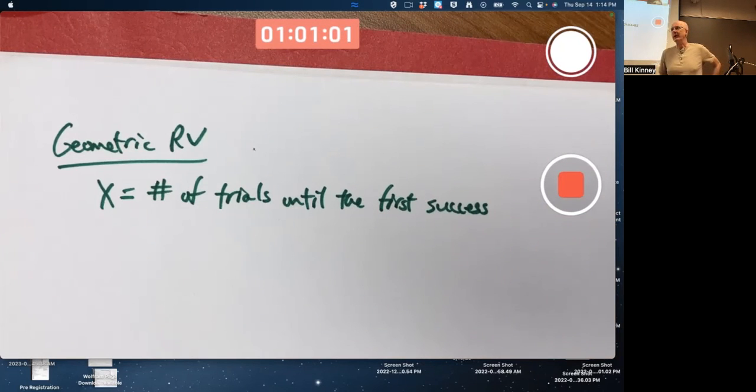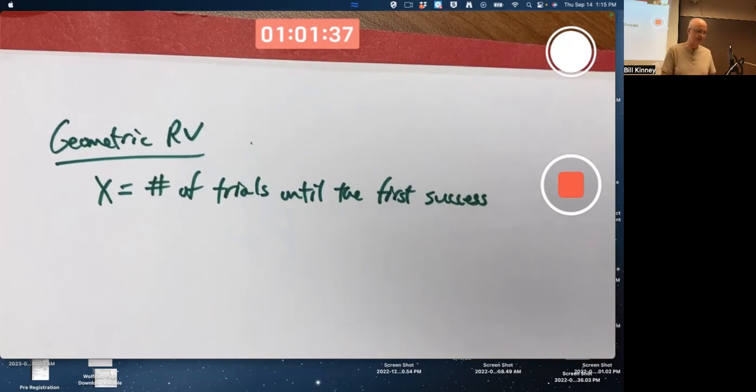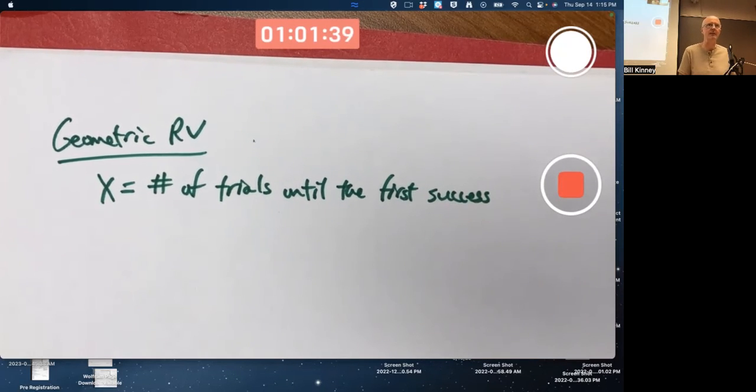This is the number of trials until the first success. Actually, there is another way to think about geometric random variables. You could also think of it in terms of the number of failures until the first success. It's a slightly different way of thinking about it, which results in a slightly different formula. It's related. If it takes you five trials, five flips until you get the first head, that means you've got four failures until you get the first, four tails until you get the first head. If heads is success, tails is failure. So it's related, but not exactly the same thing. It is an alternative way of thinking about geometric random variables.